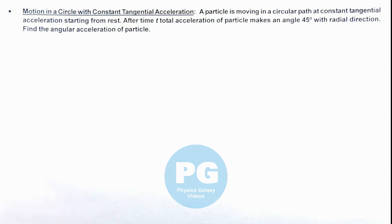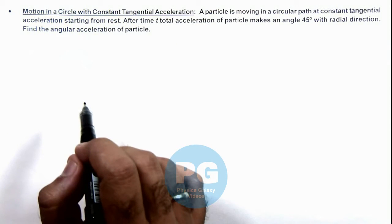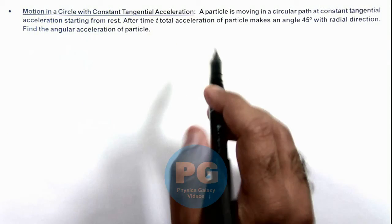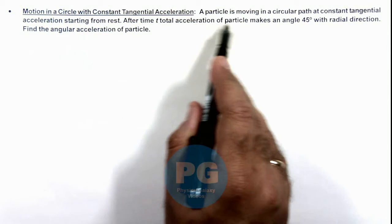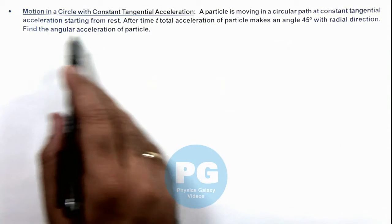In this illustration, we'll discuss motion in a circle with constant tangential acceleration. A particle is moving in a circular path at constant tangential acceleration starting from rest.